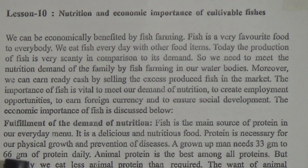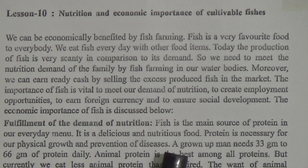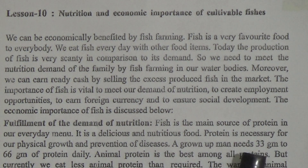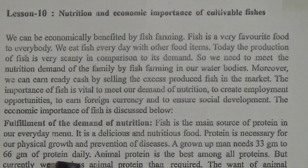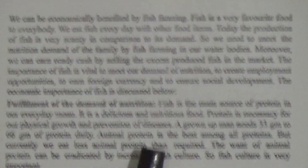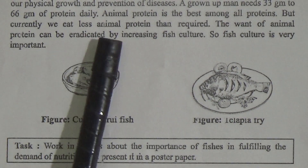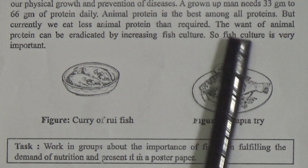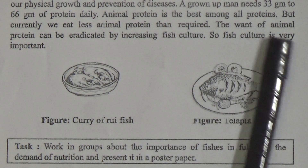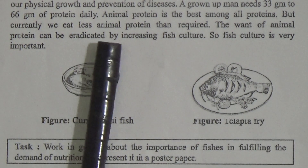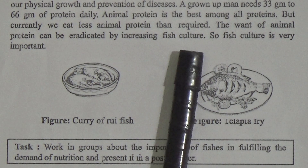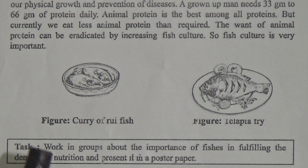Protein is necessary for our physical growth and prevention of disease. A grown-up man needs 33 grams to 66 grams of protein daily. Animal protein is the best among all products, but currently we eat less animal protein than required. The want of animal protein can be eradicated by increasing fish culture, so fish culture is very important.